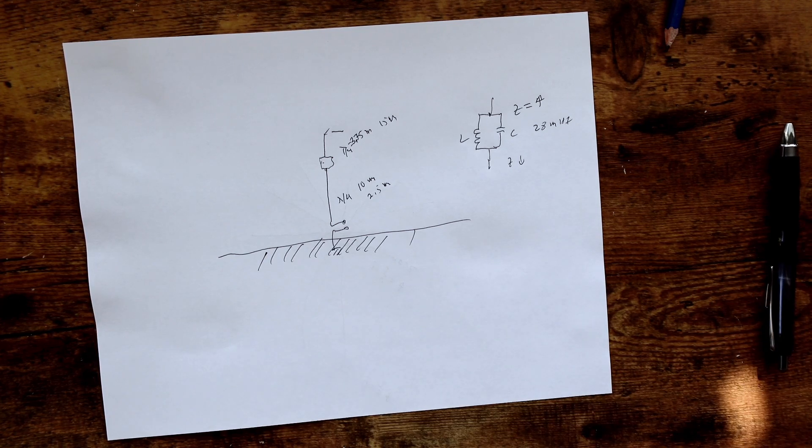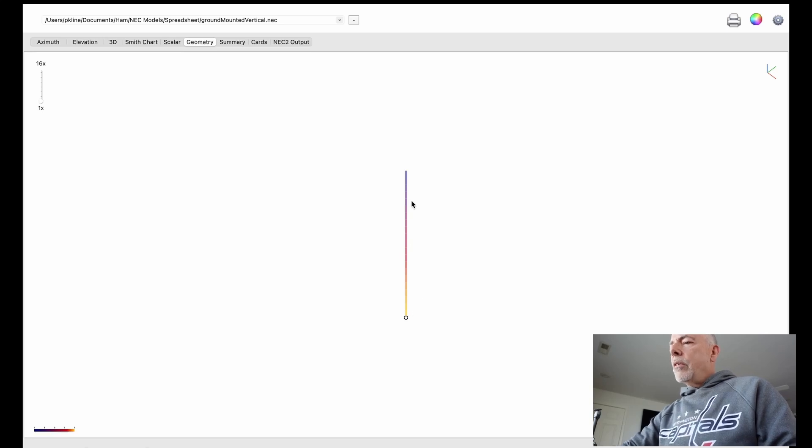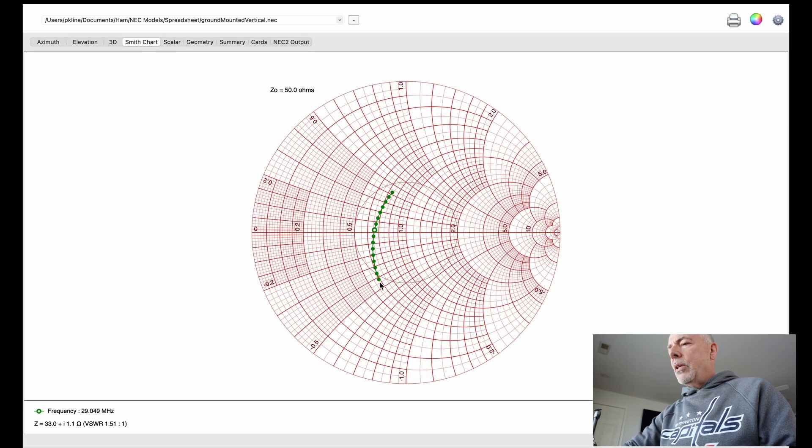So this is our 10 meter vertical antenna. And if we look at the Smith chart, this is scanning the entire 10 meter band from 28 to 30. You can see that right in the middle, the SWR is 1.5. The impedance is 33 ohms. And that's kind of what we expected.